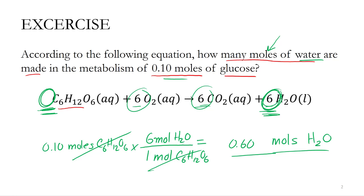In our last example, we used the coefficients of a balanced chemical equation to determine how many moles of a product — in this case water — I could make from moles of reactant. Using those coefficients that represent the molar relationship of the reactants and products as a conversion factor is the heart of stoichiometry.